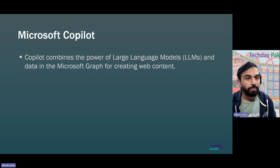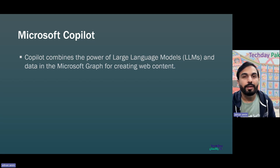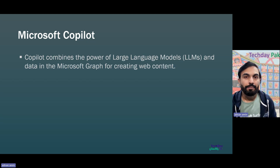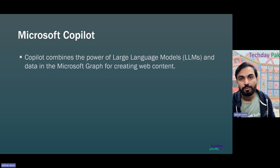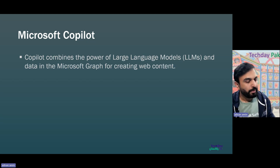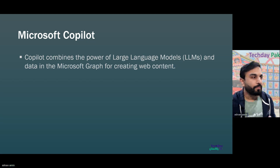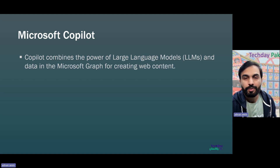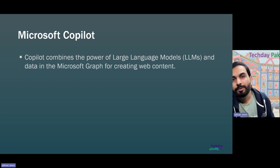Copilot is available with some minimum requirements — it comes with E3 and E5 licenses. Earlier there was a requirement for 300 user licenses in an organization, but it's now available for organizations with just a few users, and also for personal accounts.